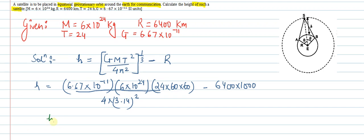We will get H equal to 3.59 into 10 to the power 7 meter. At this height we have to place the satellite to get a time period of 24 hours. So this was the answer, thank you.